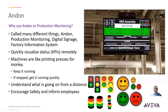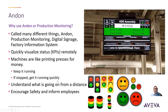I always like to say that machines are like printing presses for money. If you realize that you're making a profit on every product coming out of the machine — or if you're running a continuous process, whatever you're making or manufacturing — there's a profit associated with that. And if it's not running, it's not making money. If it stops, you need to get it running quickly.